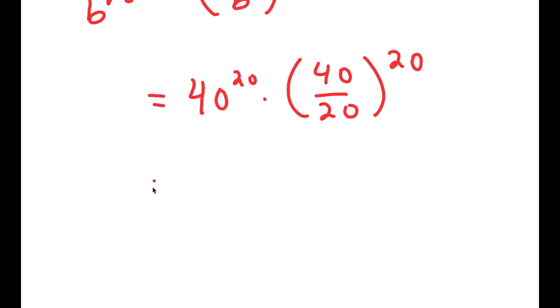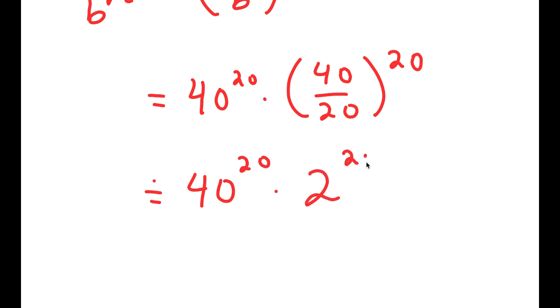And 40 divided by 20 is 2, so I get 40 to the power of 20 times 2 to the power of 20.